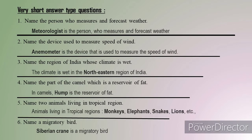Second question: name the device used to measure the speed of wind. The answer is anemometer. 'Anemo' means wind and 'meter' means a device used to measure. So it is called an anemometer — the device used to measure the speed of wind.